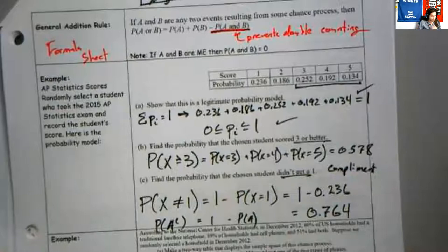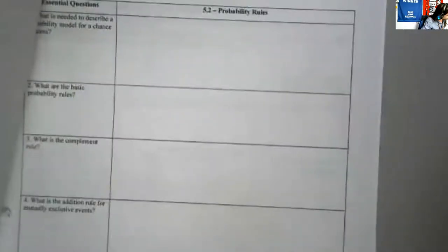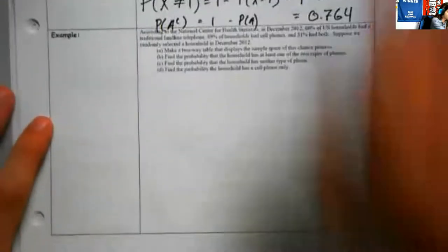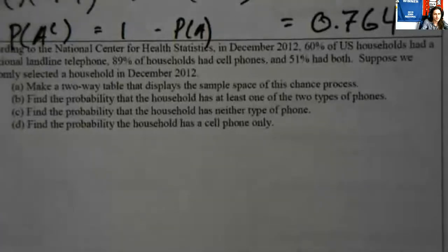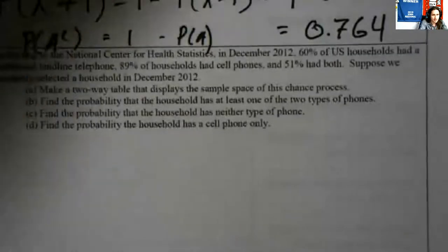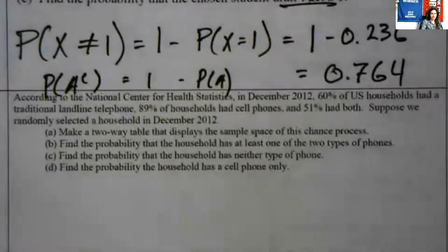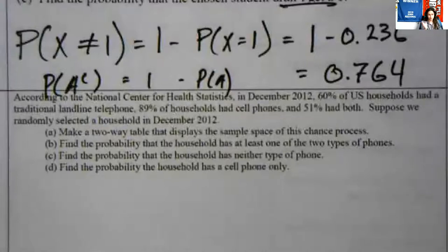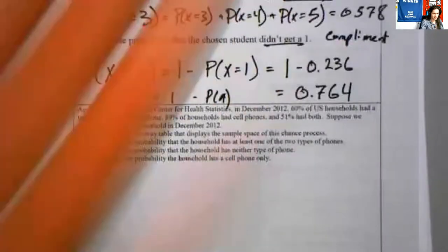So we can find probabilities and add things up. Let's do a more complicated one involving cell phones. According to the National Center for Health Statistics, in December 2012: 60% of U.S. households had a landline, 89% had cell phones, and 51% had both. Those add up to over 100%, so there's some overlap. We need to make a two-way table that displays the sample space.